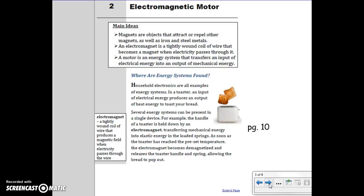Reading 2: Electromagnetic motor. Main ideas. Magnets are objects that attract or repel other magnets, as well as iron and steel metals. An electromagnet is a tightly wound coil of wire that becomes a magnet when electricity passes through it. A motor is an energy system that transfers an input of electrical energy into an output of mechanical energy.